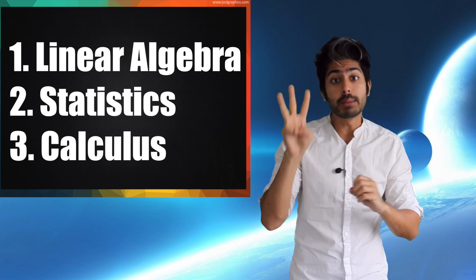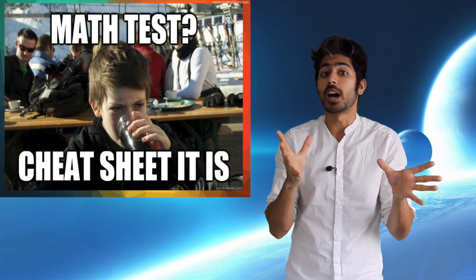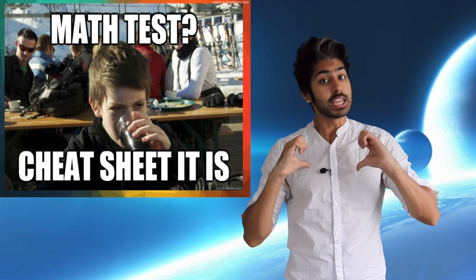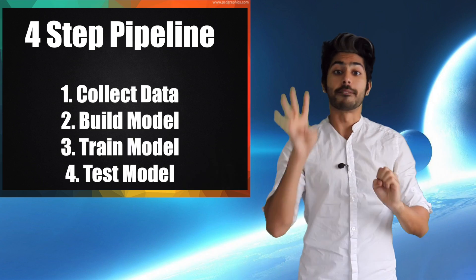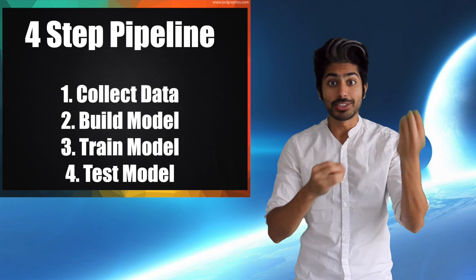Deep learning mainly pulls from three branches of math: linear algebra, statistics, and calculus. If you don't know any of these topics, I'd recommend a cheat sheet of the important concepts, and I've linked to one for each in the description. So let's go over the four step process of building a deep learning pipeline and talk about how math is used at each step.